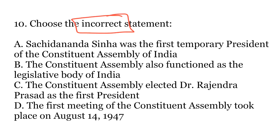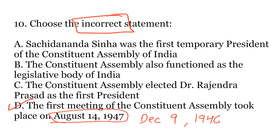The last question — choose the incorrect statement. Options: A — Sachidanand Sinha was the first temporary president of the Constituent Assembly of India; B — the Constituent Assembly also functioned as the legislative body of India; C — the Constituent Assembly elected Dr. Rajendra Prasad as the first President; or D — the first meeting of the Constituent Assembly took place on August 14, 1947. The incorrect statement is D. The first meeting of the Constituent Assembly actually took place on 9th December 1946. All three other statements are correct.